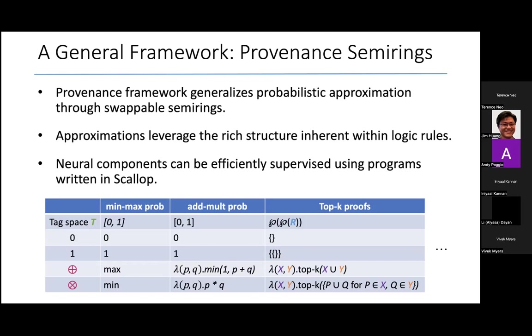And that is what we have implemented in Scallop. And until now, no one had applied provenance semirings to the problem of differentiable reasoning. By adopting Datalog as a symbolic reasoning language, we were the first to bring the benefits of provenance semirings to this new application domain of differentiable reasoning for neurosymbolic applications.